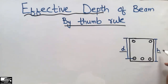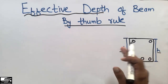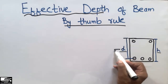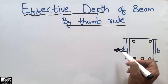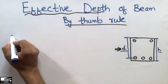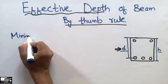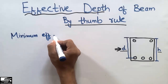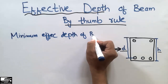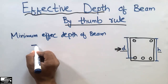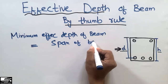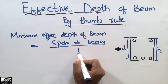For the total depth of beam, I have also made a separate video you can check on my channel. But here in this lecture, we are going to discuss the effective depth of beam by thumb rule — how we find the effective depth by a shortcut method. This thumb rule states that the minimum effective depth of beam is equal to the span of the beam divided by 10.